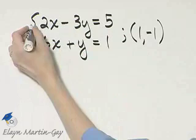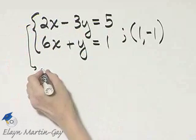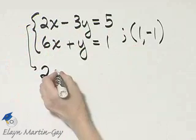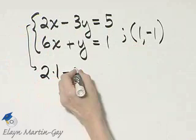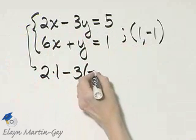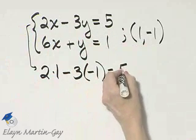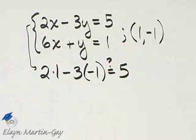So let's check in the first equation. I'll have 2 times, instead of x I'll write 1, minus 3 times, instead of y I'll write negative 1, and I want to know, is this a true statement?